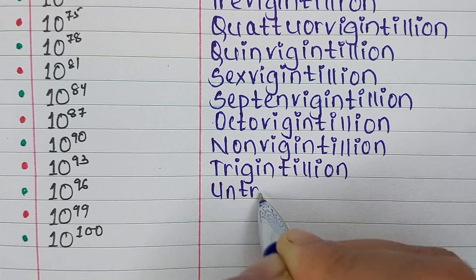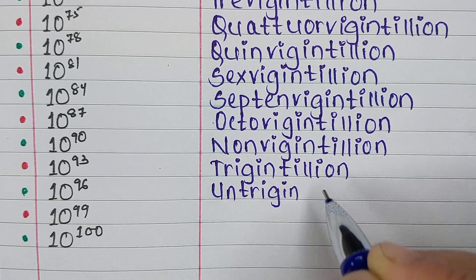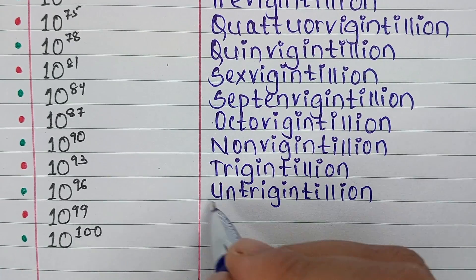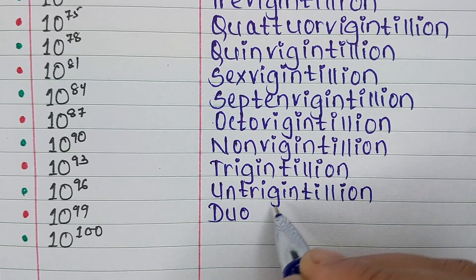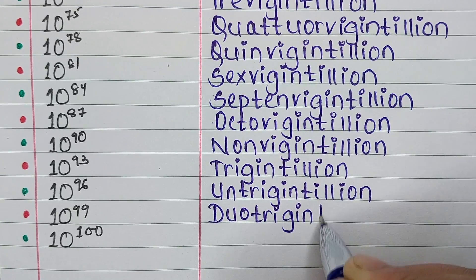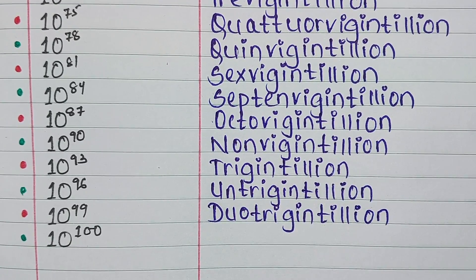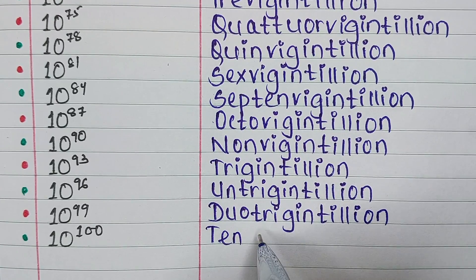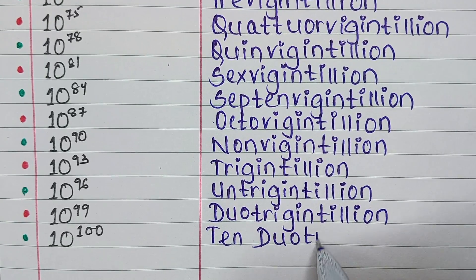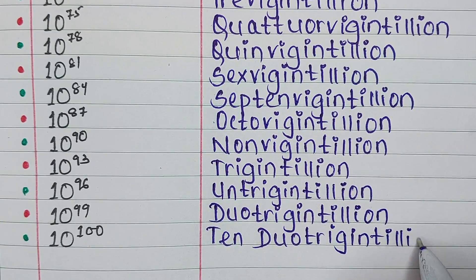Next is 10 to the power 96. It is known as Untrigintillion. Next is 10 to the power 99. This particular power notation is known as Duotrigintillion. Last one is 10 to the power 100, which is known as Googol.